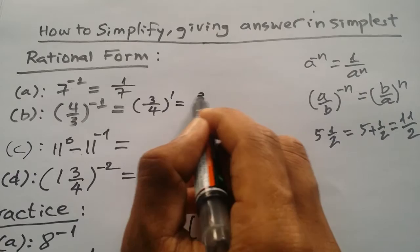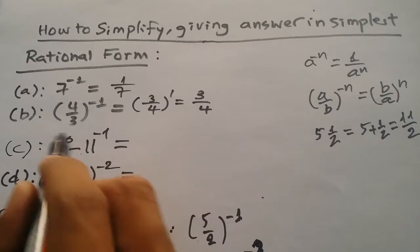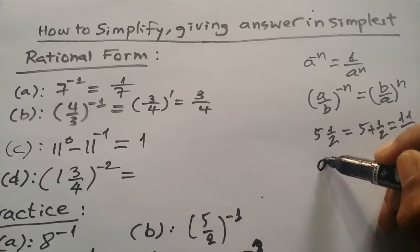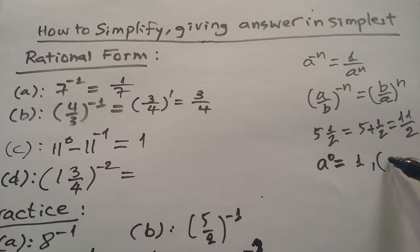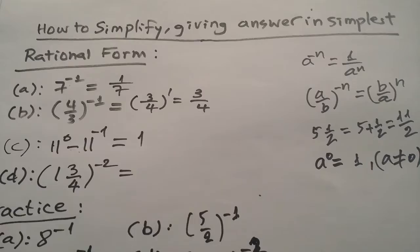For this one, we use the formula: a to the power 0 equals 1, because a is different from 0. So 11 to the power 0 gives 1, and the result is 1 divided by 11.